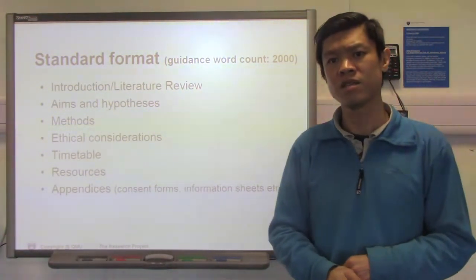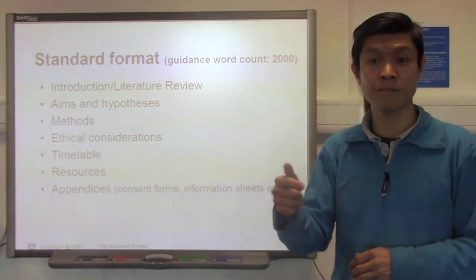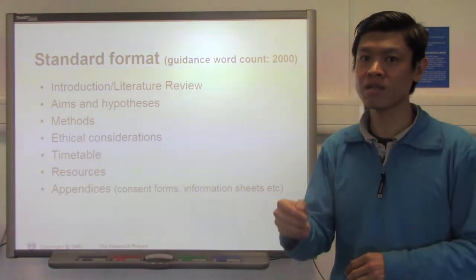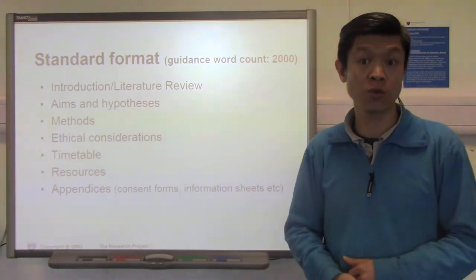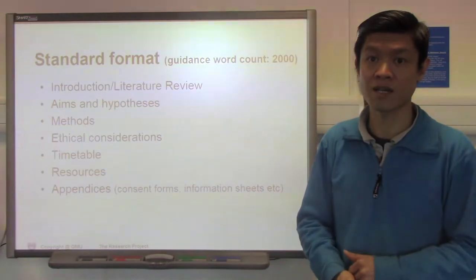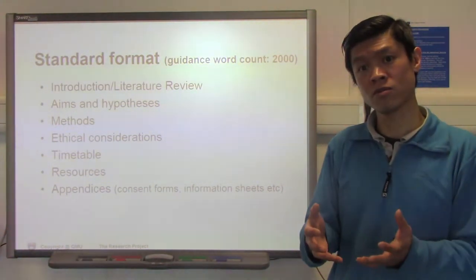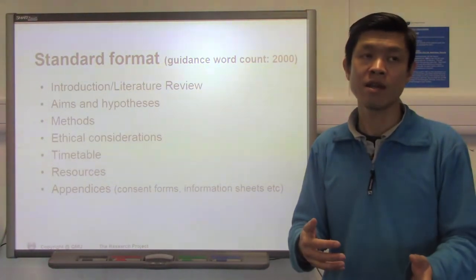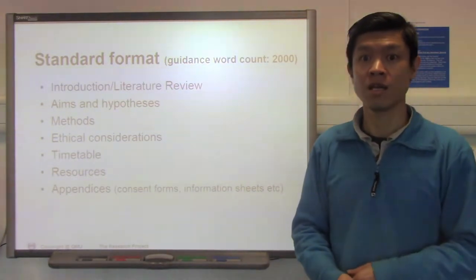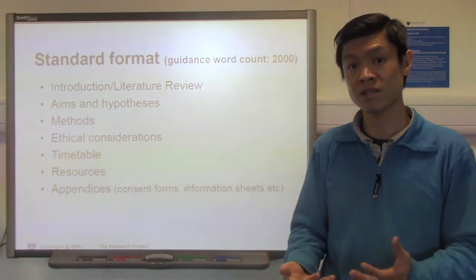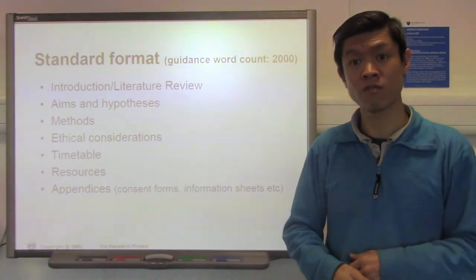For everything you write within the introduction and literature review, every single point you make should logically link back to your research question and research aim. If something does not link back to your research aim, question whether it should be included at all. After all, it's only a 2000-word document, so you want to be as efficient, concise, and succinct as possible. It is a skill — it's not easy to be concise and yet get all the points in. Multiple drafts will help you. Do not be afraid to draft it again and again. Many of us within the university have gone through multiple drafts before being satisfied with something ready for approval.